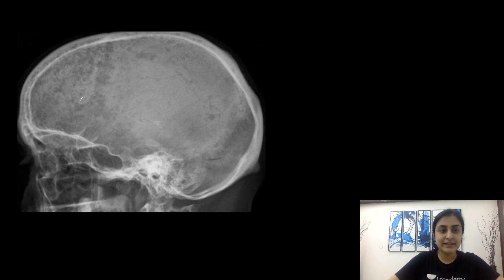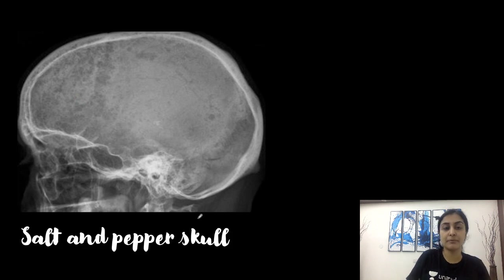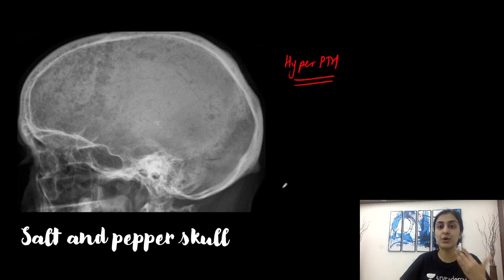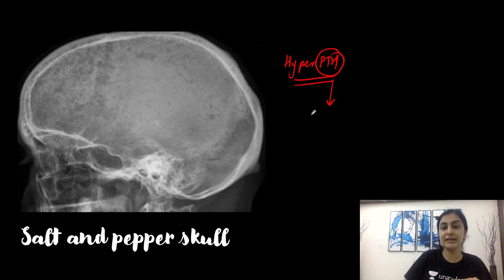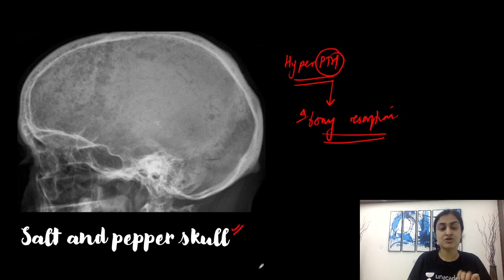In the next X-ray, can you see very very tiny black dots — multiple very tiny black and white dots, much smaller than what we saw for multiple myeloma and lytic metastasis? These tiny black and white dots are referred to as the salt and pepper appearance. This salt and pepper skull is seen in hyperparathyroidism, due to the action of parathormone causing bony resorption — specifically trabecular bony resorption.